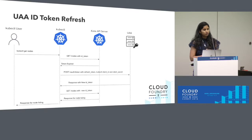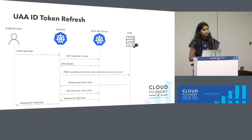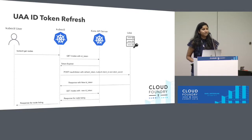UAA is providing the identity and the claims, but the enforcement of what the user can access is actually happening in Kubernetes. The Kubernetes API server is acting as a resource server. Thank you very much.